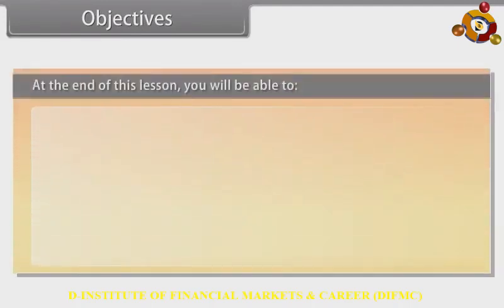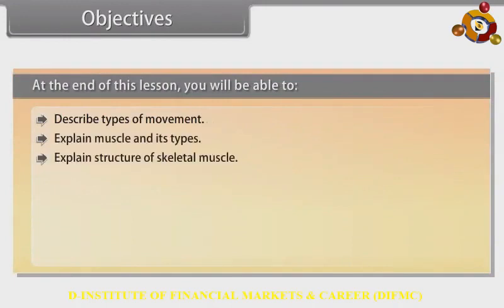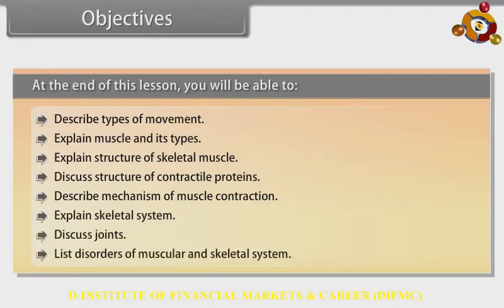At the end of this lesson, you will be able to: describe types of movement, explain muscle and its types, explain structure of skeletal muscles, discuss structure of contractile proteins, describe mechanism of muscle contraction, explain skeletal system, discuss joints, and list disorders of muscular and skeletal system.